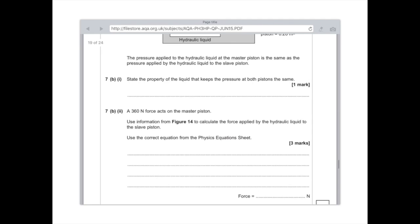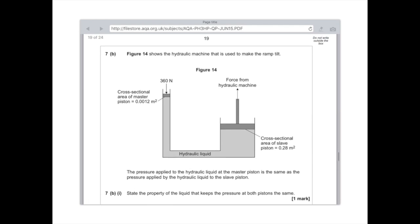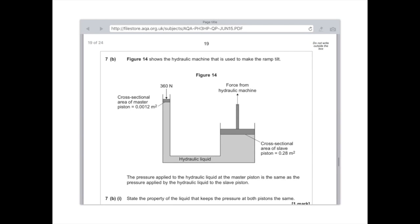A 360 Newton force acts on the master piston. Use information from figure 14 to calculate the force applied by the hydraulic liquid to the slave piston and use the correct equation. Right, let's have a look at it now. We can see that we've been given the information here, which is the master piston has a force of 360 Newtons being exerted over this tiny area here. We've been given the area on the cross-sectional slave piston and it's asked us to work out what the force is here.